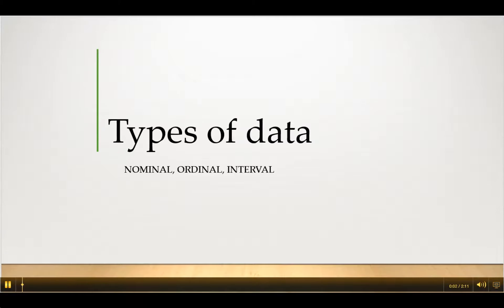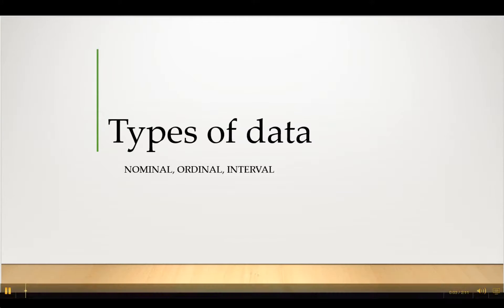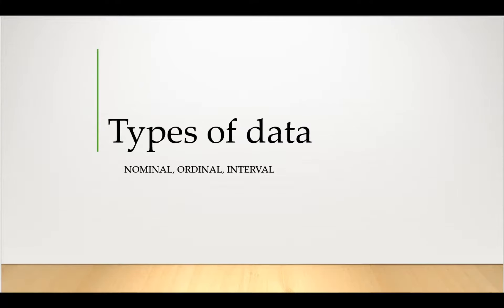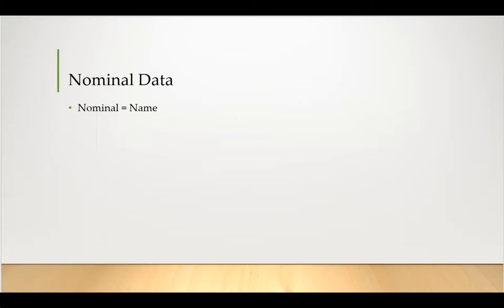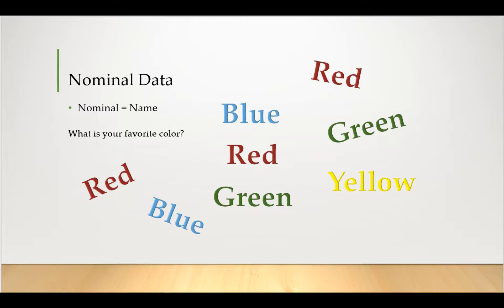Let's take a look at the different types of data: nominal, ordinal, and interval. First, we look at nominal data. Nominal actually comes from the same root word as name, so when you think of nominal data, think of naming something. For example, you could ask someone, what is your favorite color? You might get answers like red, green, blue, yellow.